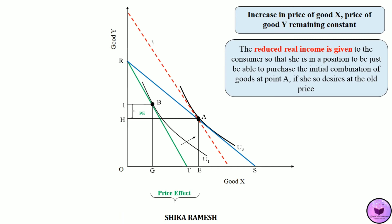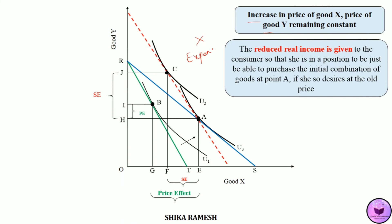Of the EG amount of good X being consumed less by the consumer, EF amount of good X has been consumed less due to substitution effect. The price of good Y remaining the same, when the price of good X increased, good X has become more expensive than good Y, which is why the consumer demanded less of good X and more of good Y. EF amount of good X has been consumed less due to substitution effect — the movement from point A to C shows the substitution effect — and due to this, the consumer is at a lower utility level U2. The FG amount of good X has been consumed less because of income effect; the movement from point C to B shows the income effect.